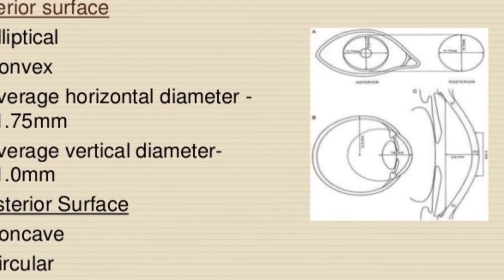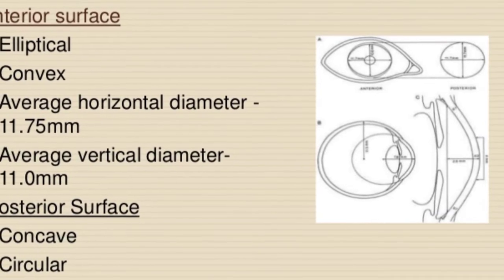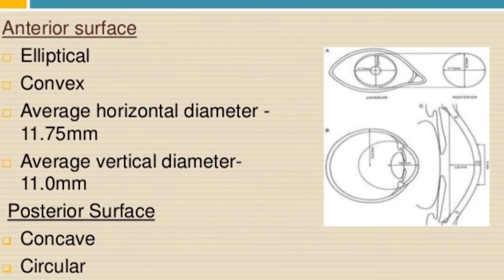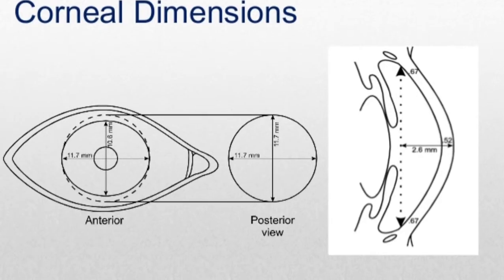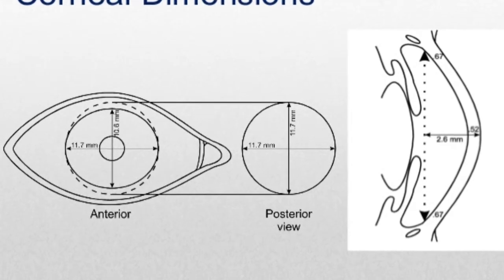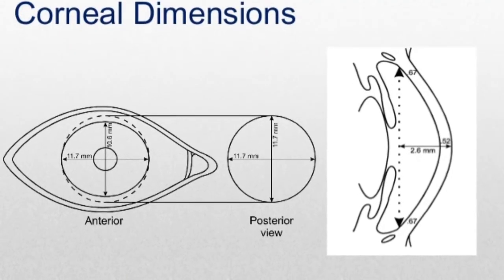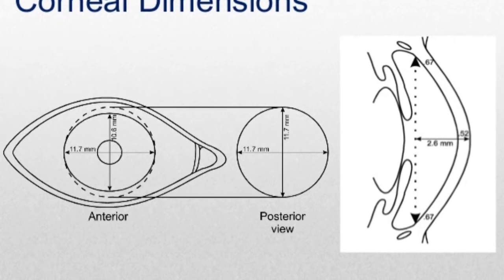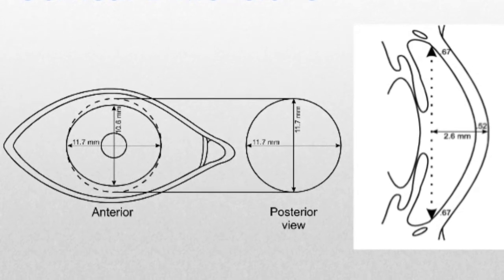The anterior surface of the cornea is elliptical with an average horizontal diameter of 11.75 mm and a vertical diameter of 11 mm. The posterior surface of the cornea is circular with an average diameter of 11.5 mm. Thickness of the cornea in the center is about 0.52 mm, while at the periphery it is 0.67 mm.